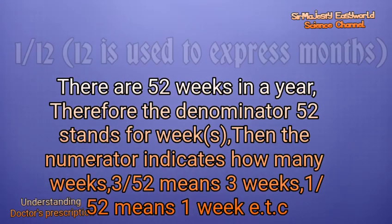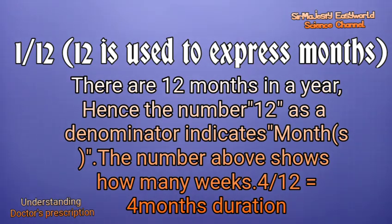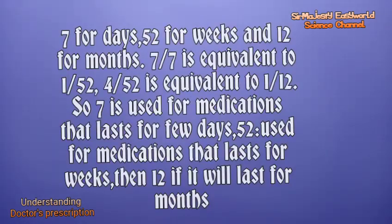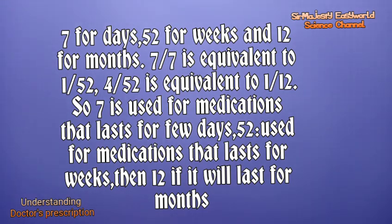What about 1 over 12? We have 12 months in a year, so 12 is used to express months. That means 1 over 12 means you take the medication for one month, and 2 over 12 means two months. Summary: 7 is for days, 52 is for weeks, and 12 is for months. So if you see 4 over 12, it means four months. That's the duration of dosage.